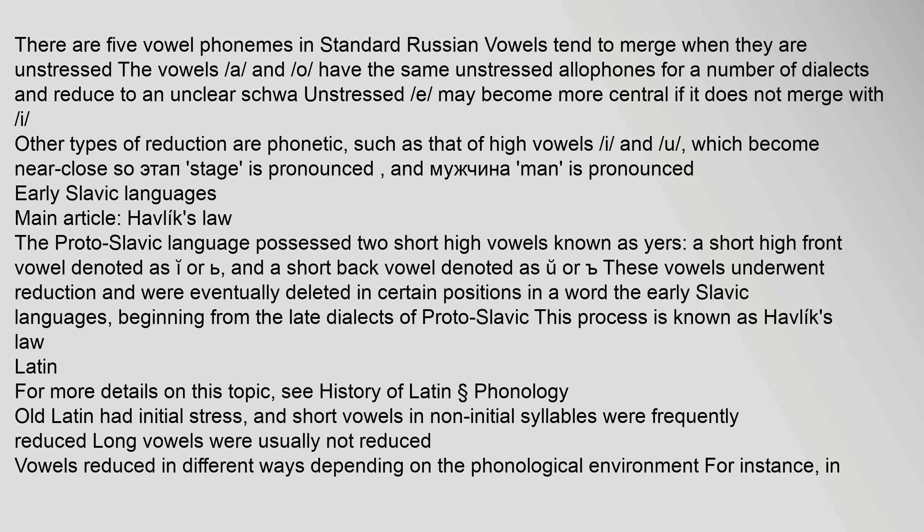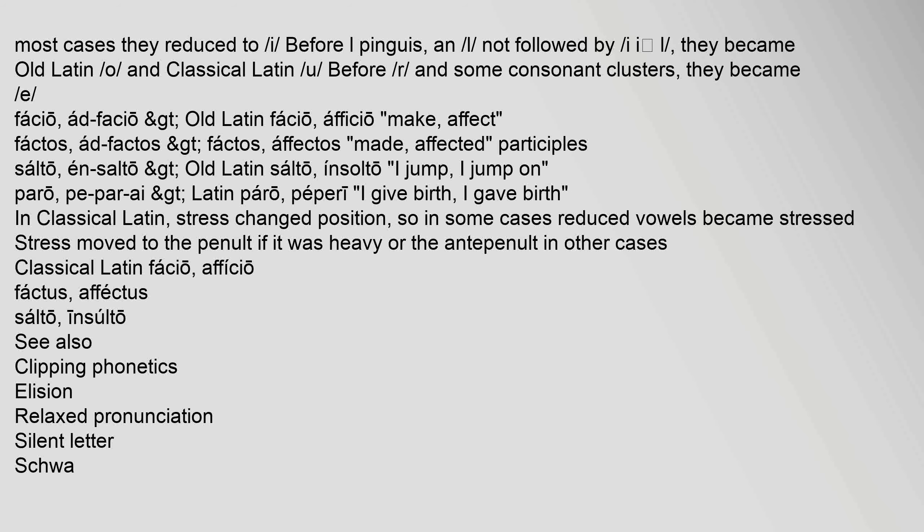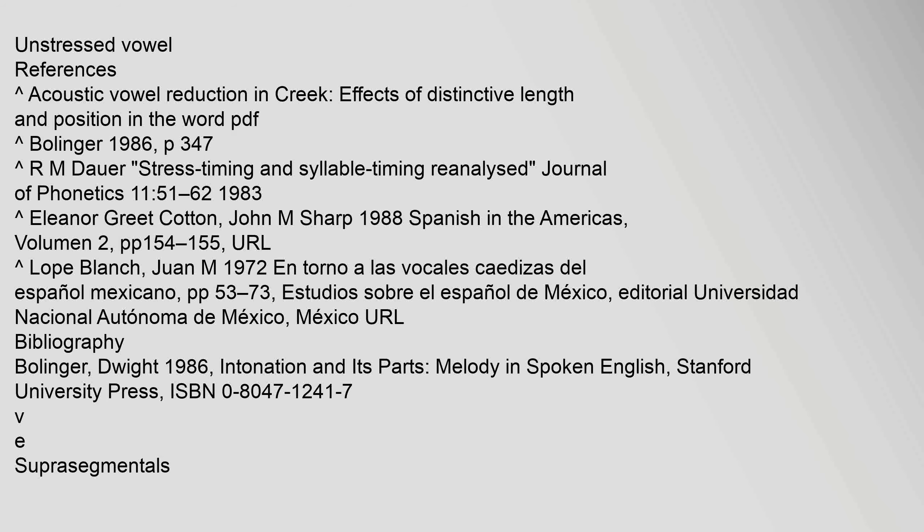Early Slavic languages — Havlik's Law: the Proto-Slavic language possessed two short high vowels known as yers — a short high front vowel and a short back vowel. These vowels underwent reduction and were eventually deleted in certain positions in a word, a process beginning from the late dialects of Proto-Slavic, known as Havlik's Law. Latin: in most cases, vowels were reduced to /i/ before l-pinguis, and before /l/ not followed by another vowel; they became Old Latin /o/ and Classical Latin /u/. Before /r/ and some consonant clusters, they became /e/, as in facio versus ad-facio.